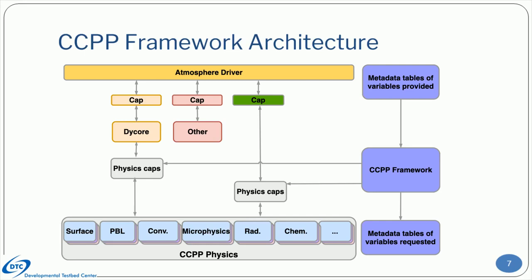It then generates Fortran interfaces between the host model and the physics. As this figure suggests, these interfaces can hook up the physics with the atmospheric driver in a traditional way, or inside the dynamical core. In models that call the dynamics more often than the physics, this enables the ability to call both fast and slow physics. The caps, along with the rest of the physics and host model codes, are then compiled together to create the model executable. At run time, the framework is used to pass variables between the host and the physics.